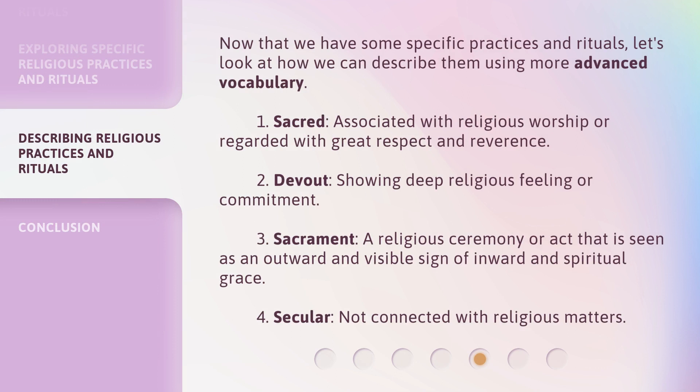Now that we have some specific practices and rituals, let's look at how we can describe them using more advanced vocabulary. 1. Sacred — associated with religious worship or regarded with great respect and reverence. 2. Devout — showing deep religious feeling or commitment. 3. Sacrament — a religious ceremony or act that is seen as an outward and visible sign of inward and spiritual grace. 4. Secular — not connected with religious matters.